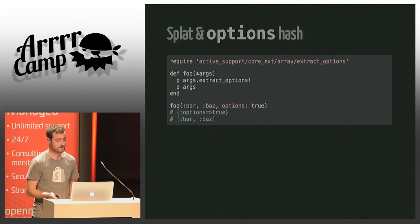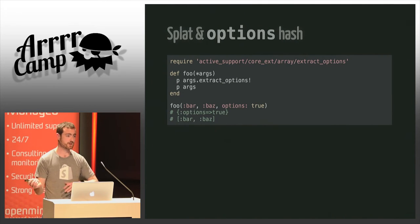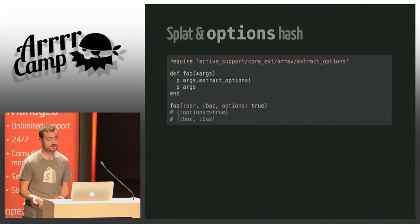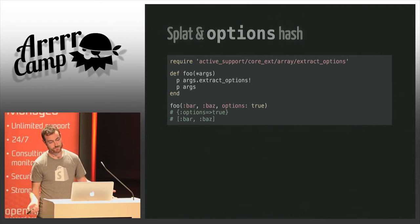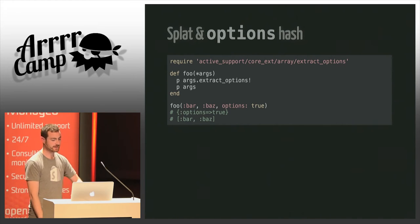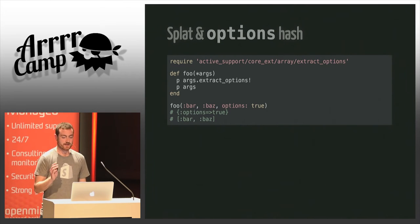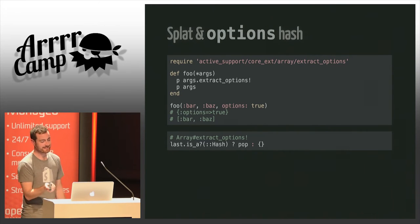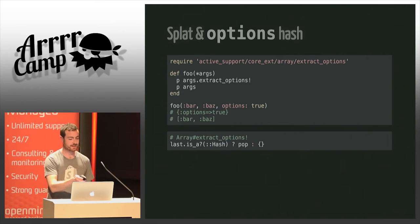Another issue is when we try to combine the splat operator with the options hash — we can't do it straight away, so we need another line of boilerplate. Even then, `extract_options!` — I thought it would be just one line of code, but in fact in Rails they do quite a bit more.